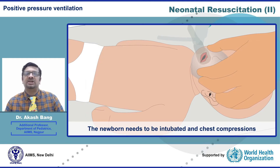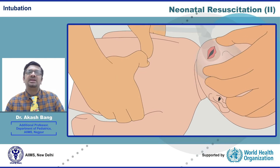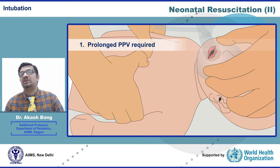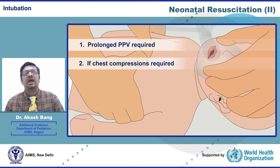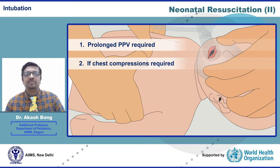Let us first learn about intubation. The main indication is when a newborn is not responding to PPV and has a heart rate below 60 even after effective PPV for 30 seconds. In that case, chest compressions will need to be started, and before starting chest compressions it is recommended that intubation should be done. That is one indication. Additionally, endotracheal intubation is indicated if PPV is required for a prolonged period of time, perhaps more than a few minutes.